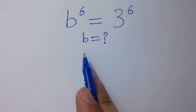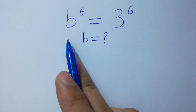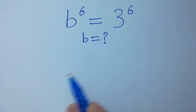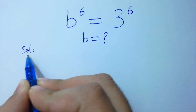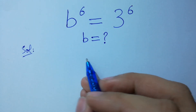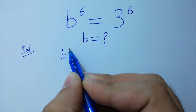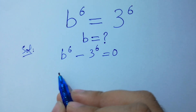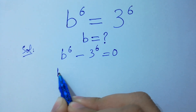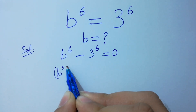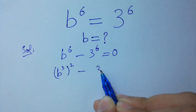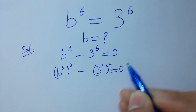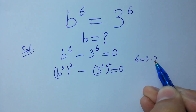Hello friends. Find the value of B if B to the power 6 equals 3 to the power 6. Let's have a solution. This problem can be written as B to the power 6 minus 3 to the power 6 equals 0, which is the same as B to the power 3 squared minus 3 to the power 3 squared equals 0, since 6 equals 3 times 2.